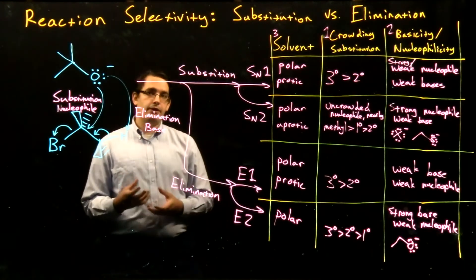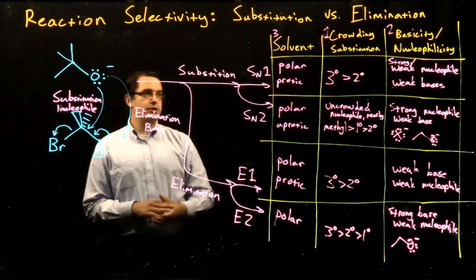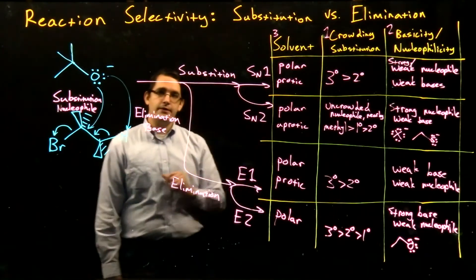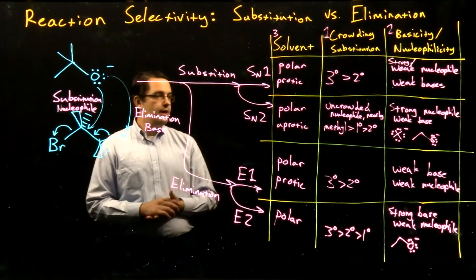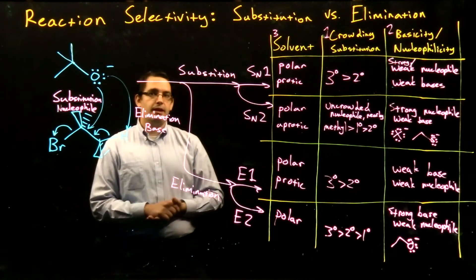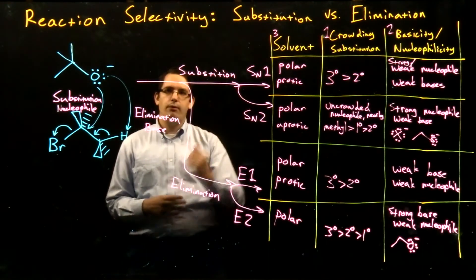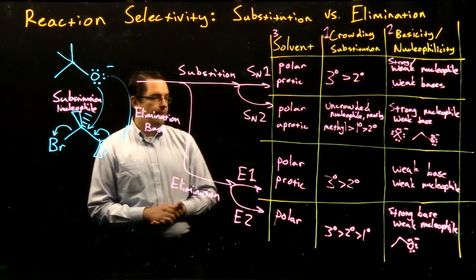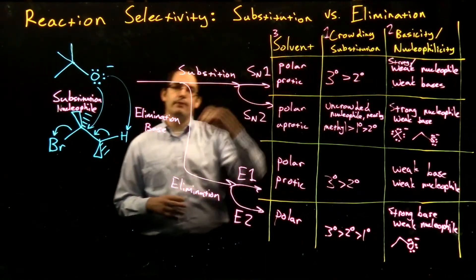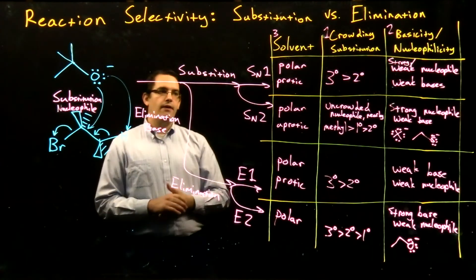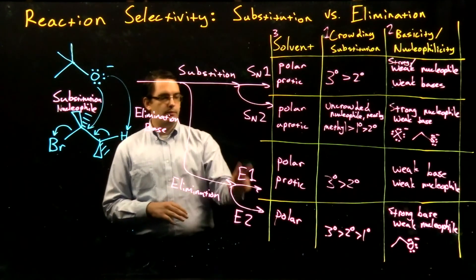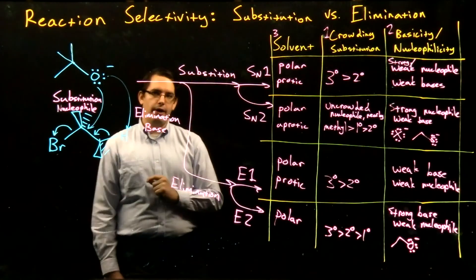Our organic molecules are actually evaluating these different key factors in order to choose what reaction they want to perform. This is something that we can do as well — we can analyze the different factors affecting our system and predict what reaction is going to occur. So that's very important: if we want to synthesize a particular compound, we need to know for sure what reaction is going to take place to know what product we can form. We do this very commonly in lab — we might change what nucleophile or base we're using, or change what solvent we're using, in order to help ensure that we have the correct product form.